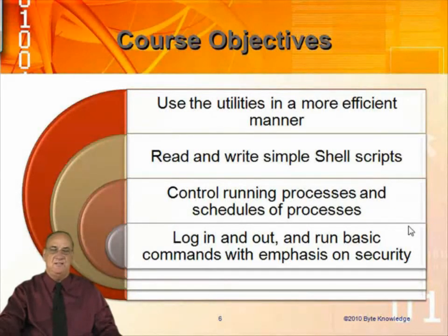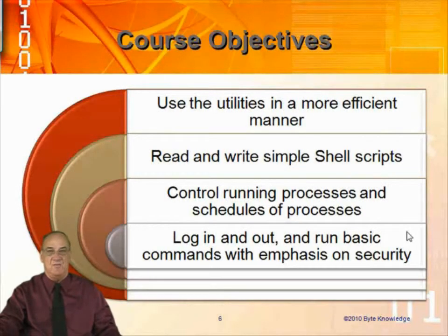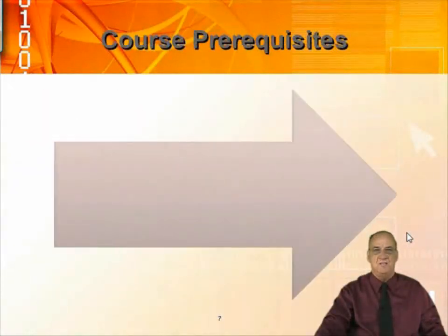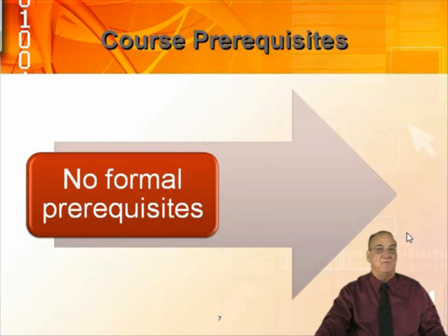We cover how to control and schedule processes. Unix has an automatic scheduler — how do we run a process at a later date and time using Cron and other utilities? How to log in and log off the system, how to get out of trouble, and what to do if you see an error message. We run basic commands with emphasis on security. For prerequisites, I assume you know nothing, though familiarity with data processing or Microsoft would help. There are really no formal prerequisites — we start from the very beginning. If you already have some knowledge of Unix, Linux, or similar systems, this is excellent review as well.